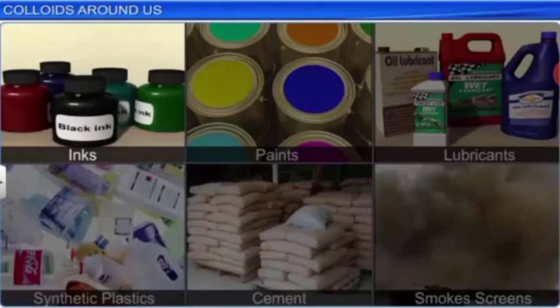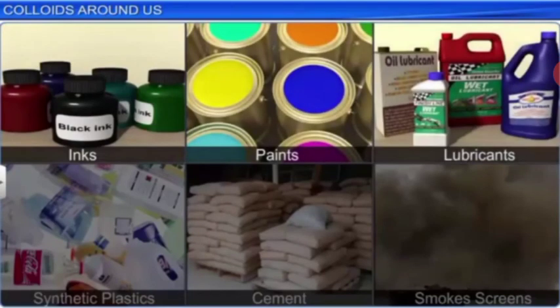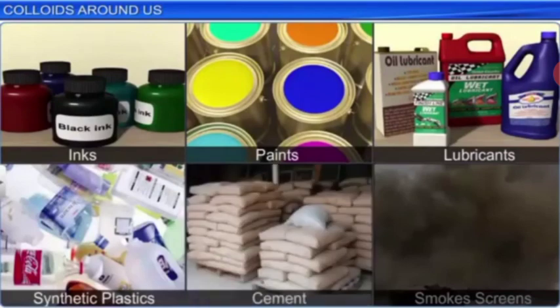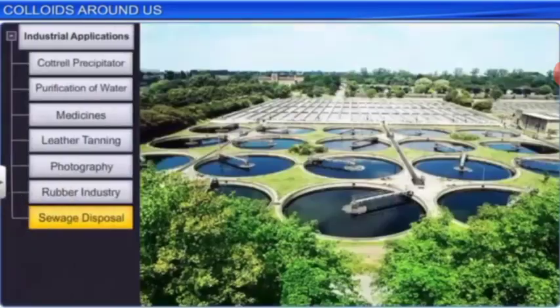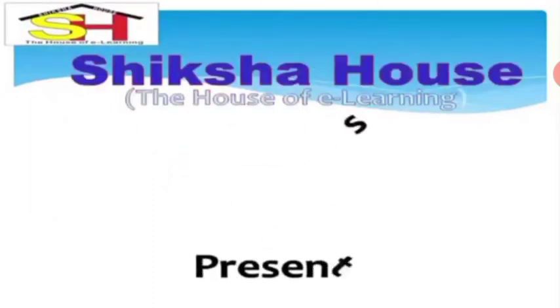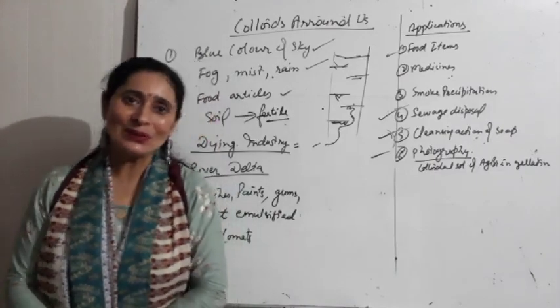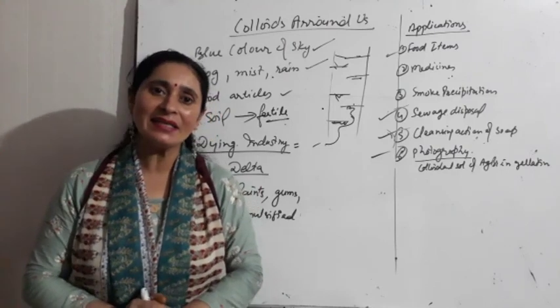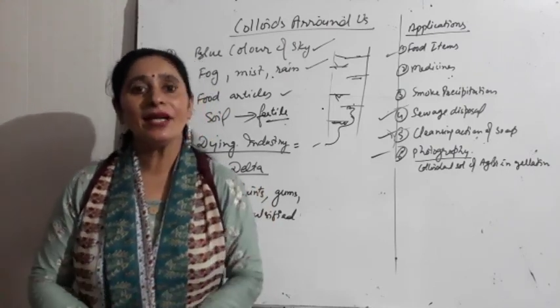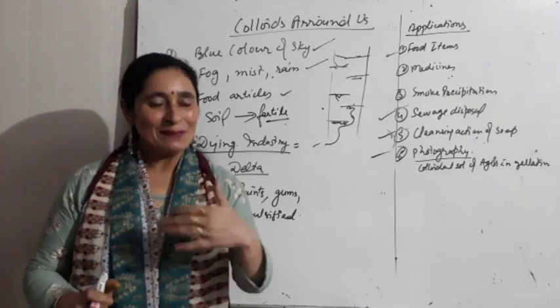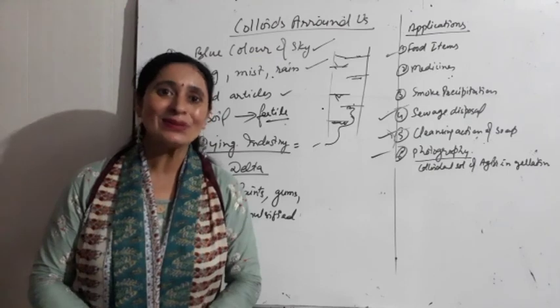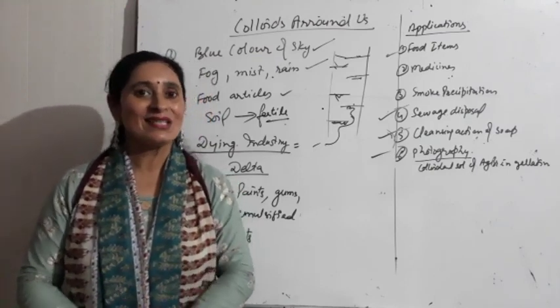Inks, paints, lubricants, synthetic plastic, cement, smoke screens — ye sab colloids ke industrial applications hain. Warfare mein smoke screens use karte hain — army ko ek jagah se doosri jagah shift karna ho to cover ke liye. Sewage disposal mein bhi is process ko use kiya jaata hai — gande paani ko treat karne ke liye. Stay home, stay safe.